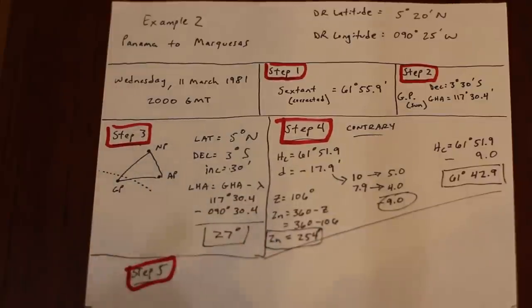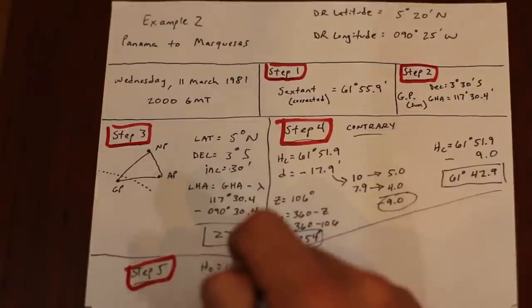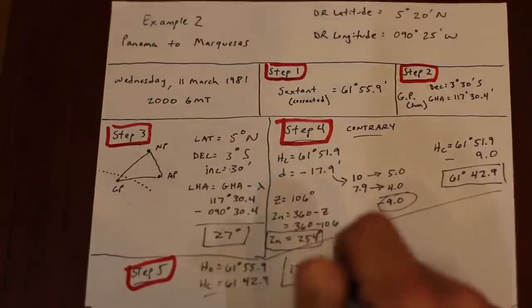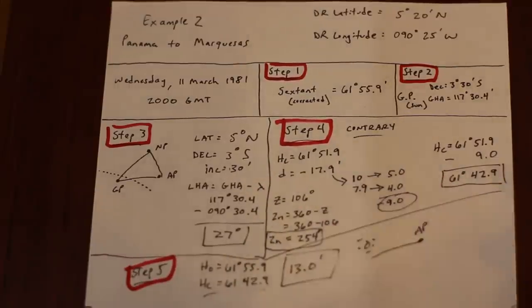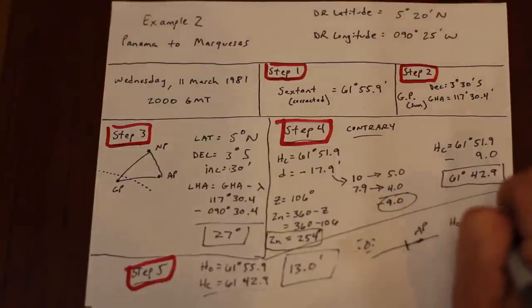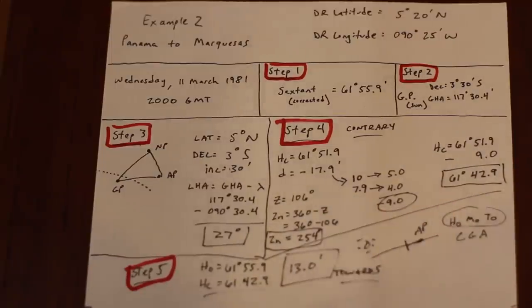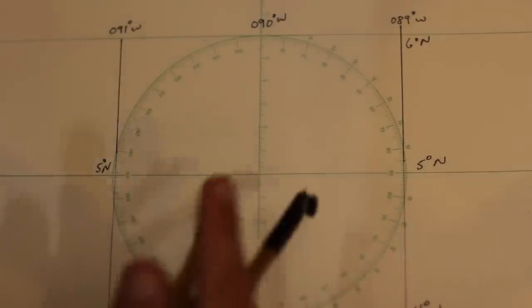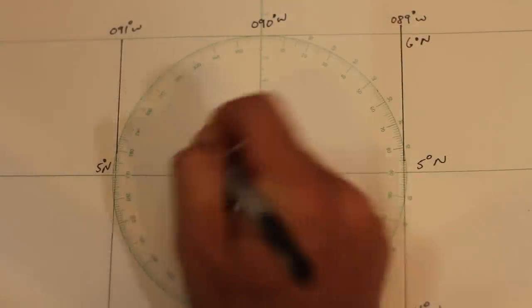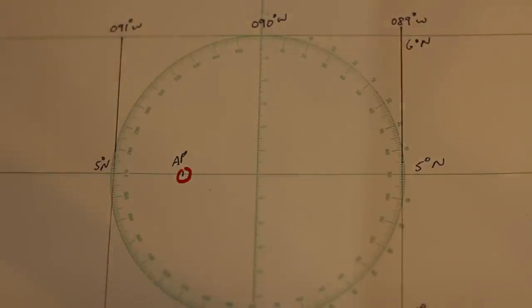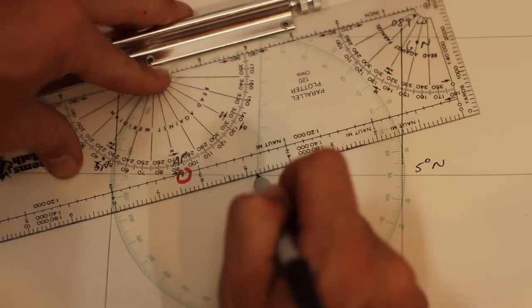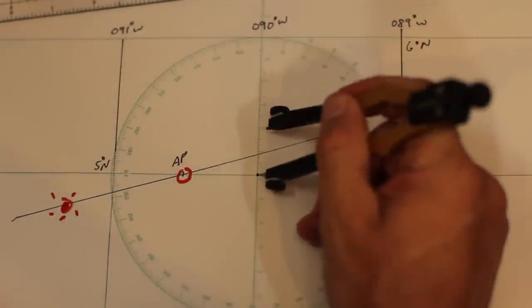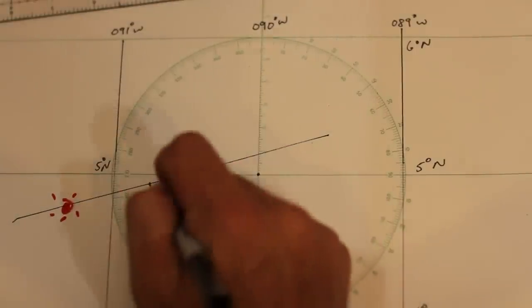Now we compare the computed height to the observed height. Note the difference and whether it's towards or away. It's towards in this case because HO is more, and then we plot. Remember to use the longitude scale in the bottom right of the universal plotting sheet, and plot the assumed position, which was an arbitrary figure that we chose to make our math easy. It was 5 degrees north, 90 degrees 30.4 minutes west. Plot the bearing to the sun, or its azimuth, and then measure off the altitude difference towards the sun. A perpendicular line, and we have our line of position.